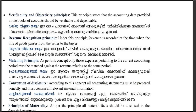The verifiability and objectivity principle states that transactions in accounting books must be supported by a receipt or voucher. The revenue recognition principle says we record revenue when it is earned. The matching principle requires that expenses be matched with revenue in the same accounting period.